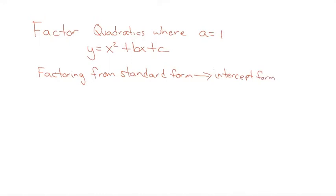When we did our warm-up problems today, every single one of the answers started with a variable squared. What we're going to learn to do is take those answers from the warm-up problems and turn them back into the questions we had — that reverse type of process.